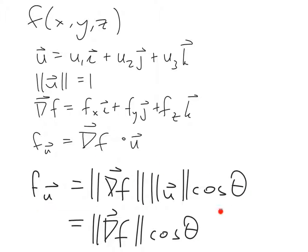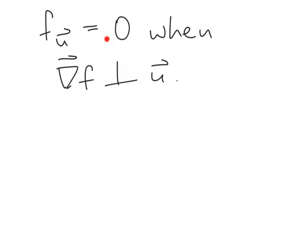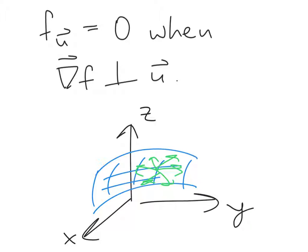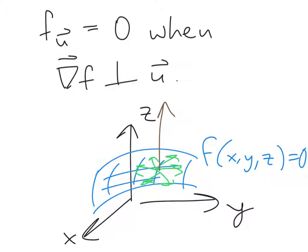The geometric meaning of a directional derivative is preserved for functions of three variables. Specifically, the directional derivative is the magnitude of the gradient times the cosine of the angle between the gradient vector and the direction of interest. This means the directional derivative is zero in directions perpendicular to the gradient vector. The directional derivative at a point within a level surface is zero whenever we move in a direction that keeps us within the surface. So the gradient is perpendicular to level sets of a function of three variables.